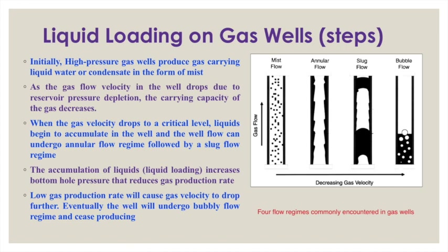When the gas velocity drops to a critical level, liquid begins to accumulate in the well. The well can then flow under annular flow regime, followed by slug flow regime. These are the typical flow regimes that occur as reservoir pressure reduces: first mist flow, then annular flow, then slug flow, and finally bubble flow. The accumulation of liquid — called liquid loading — increases bottom hole pressure and reduces the gas production rate.